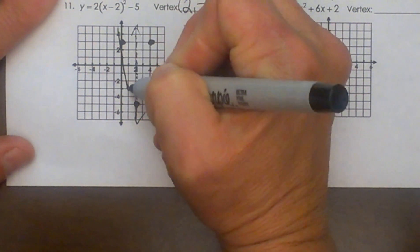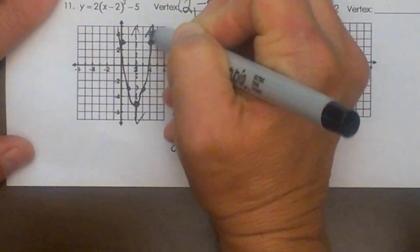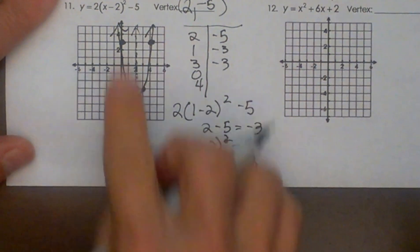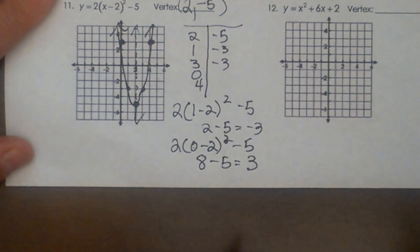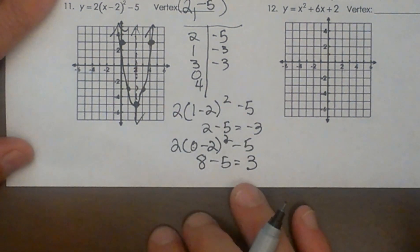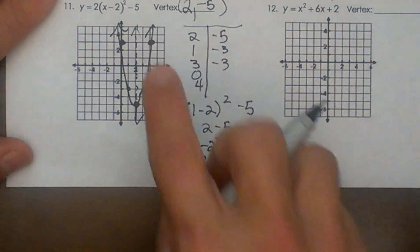And then I can just sketch my graph. Put my arrows on it because it is a continuous graph and I'm done. And that's how I would graph a quadratic function from vertex form.